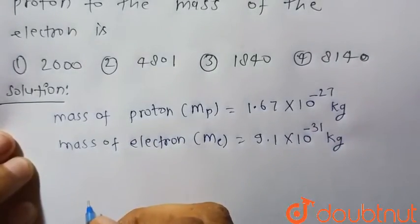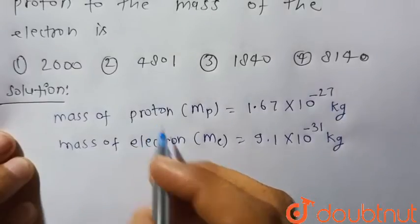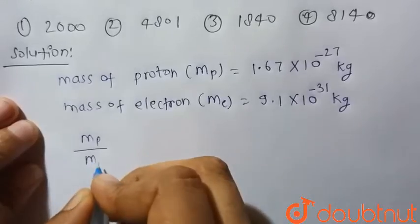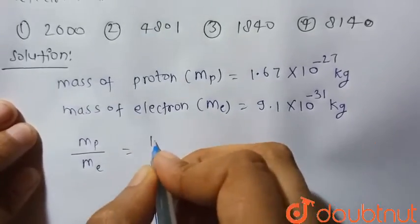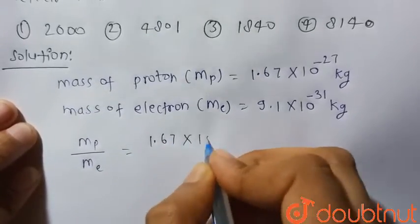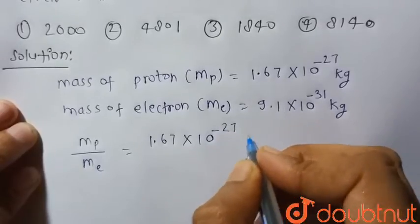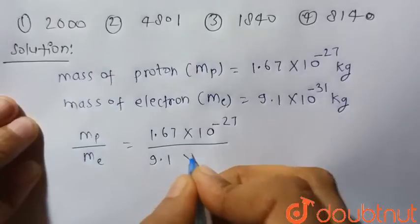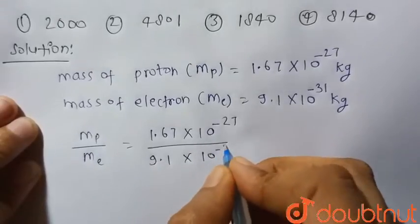Now we have to find the ratio of the mass of proton to the mass of electron, that is Mp upon Me: 1.67 × 10^-27 upon 9.1 × 10^-31.